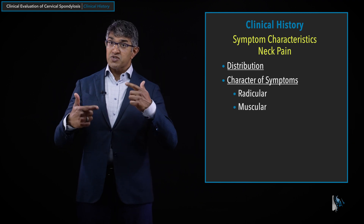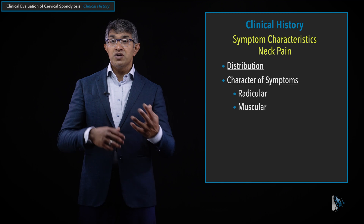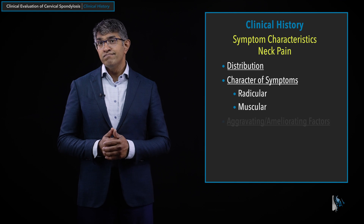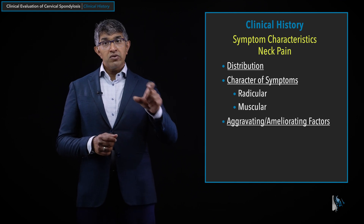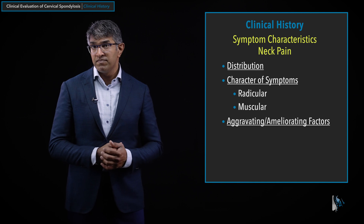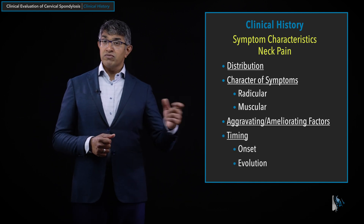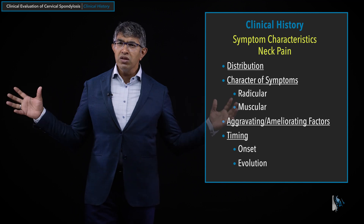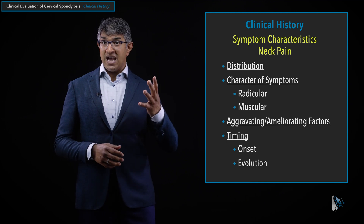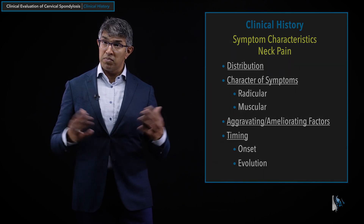I try to figure out whether neck pain is coming from a nerve, is radicular, is muscular, or coming from something else. Looking at the character of symptoms can help with that, as can aggravating and ameliorating factors — specific activities, manipulation, chiropractic treatment, or traction. We also talk about timing: how has it evolved, when did it start? All of that goes into characterizing the pain, which may or may not be coming from the cervical spine.